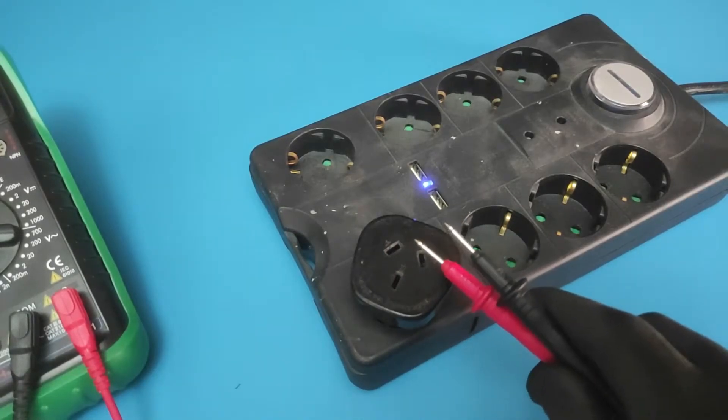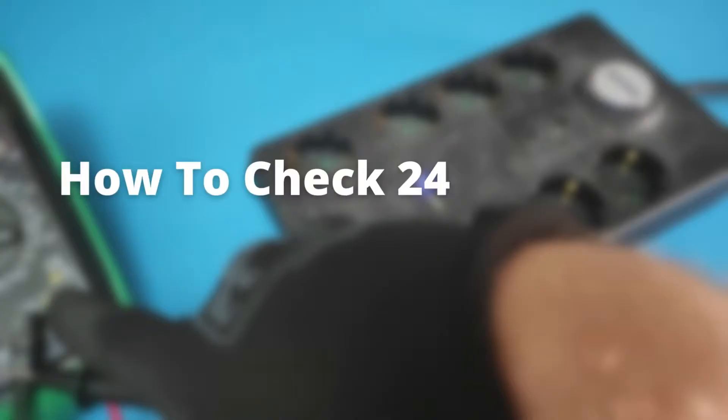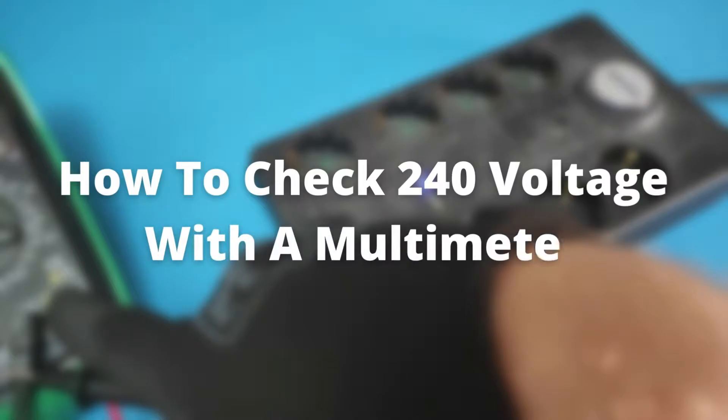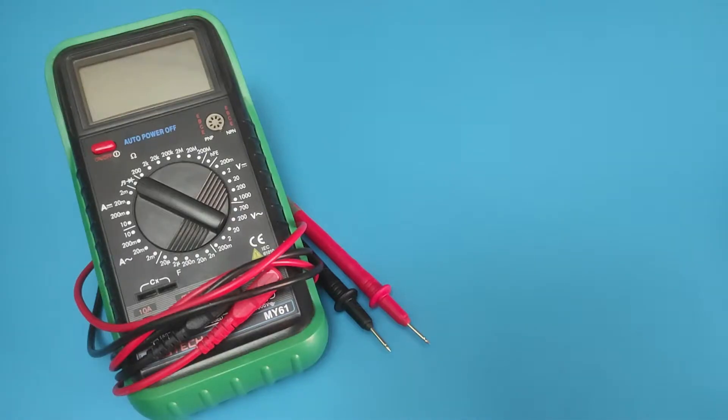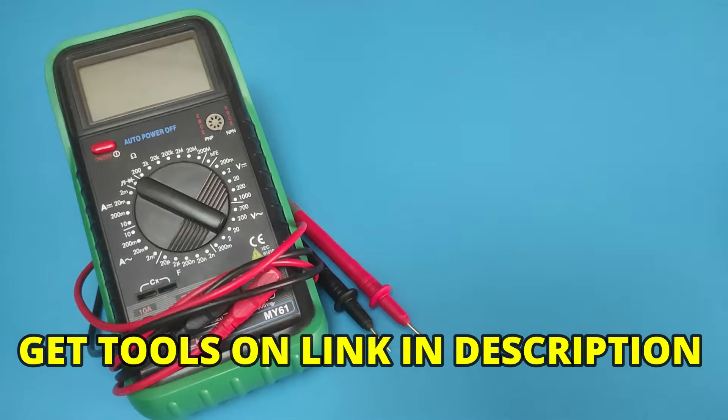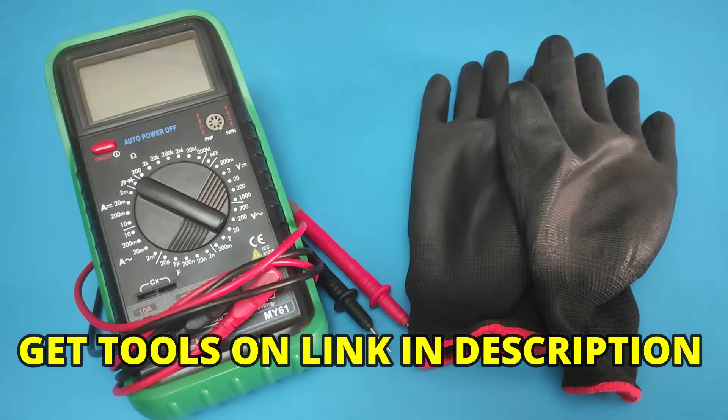Hey guys, in today's video I will show you how to check 240 voltage with a multimeter. The tools we will use are a multimeter and insulated gloves, which you can get from the links in the video description.